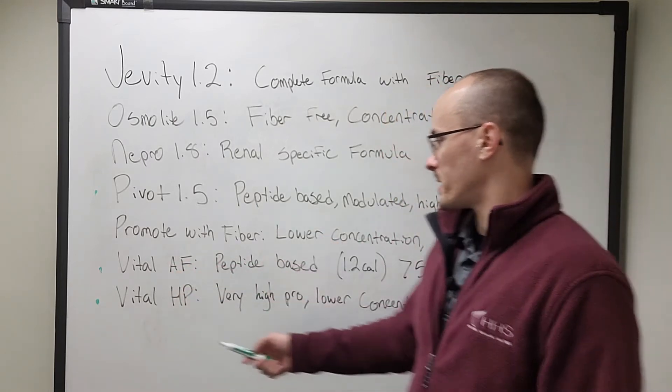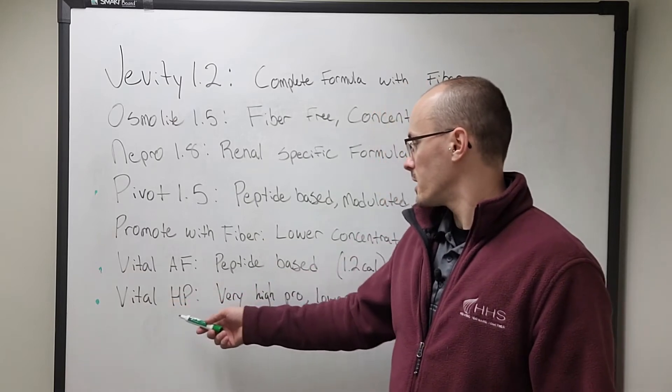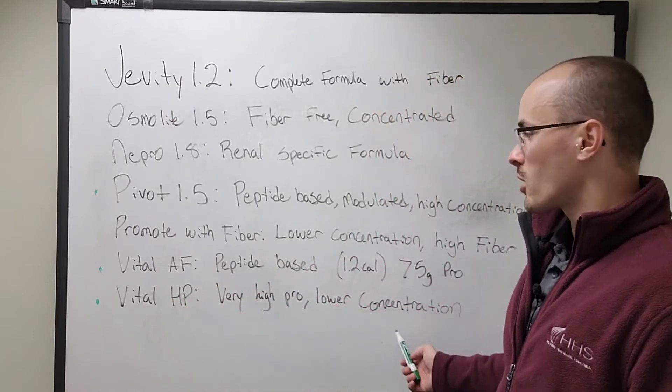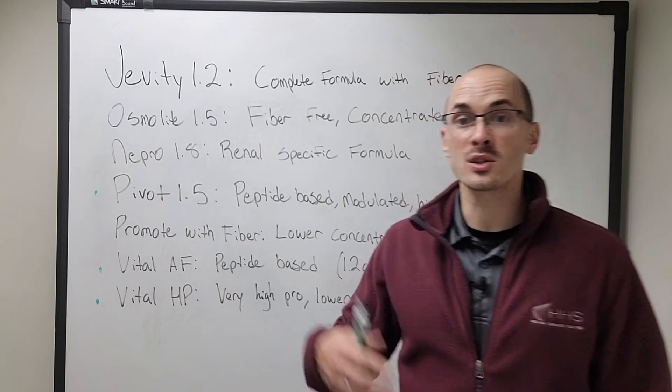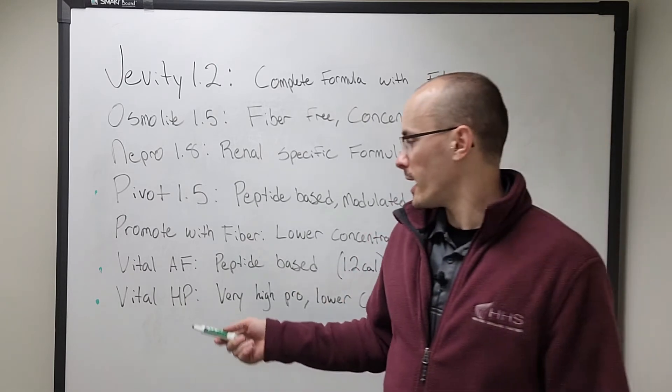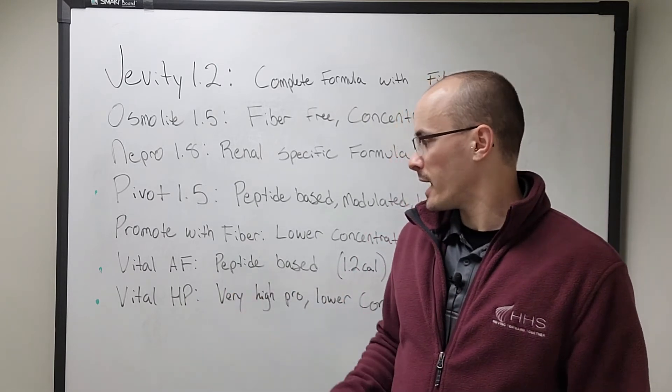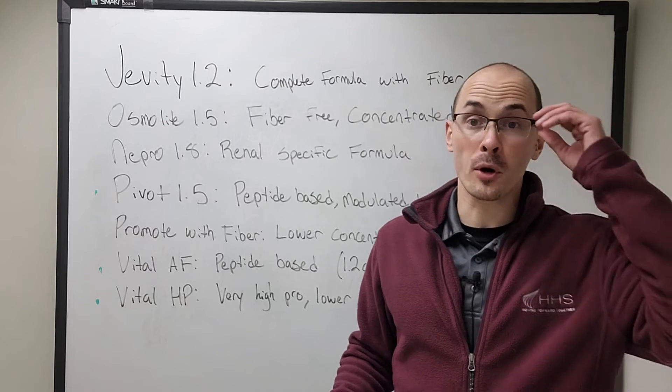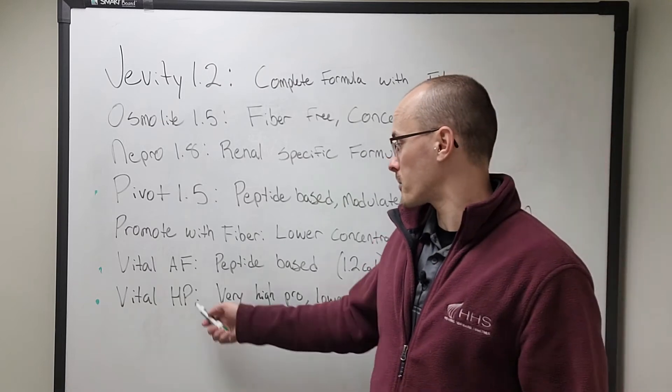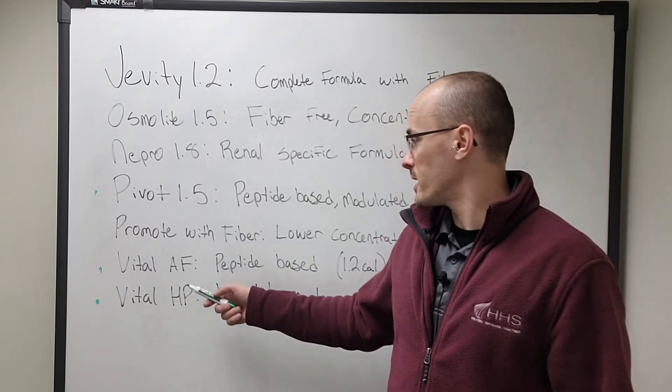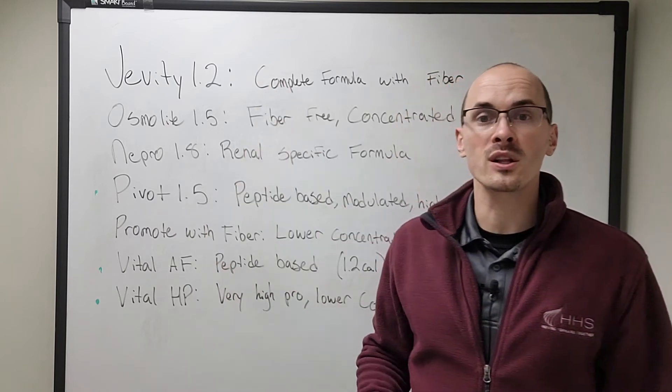These are both peptide based. Now Vital HP is very high in protein, lower in concentration. So Vital HP is a 1 Cal formula and it has 87 grams of protein per liter. So even more protein per calorie than any of the other formulas on here.